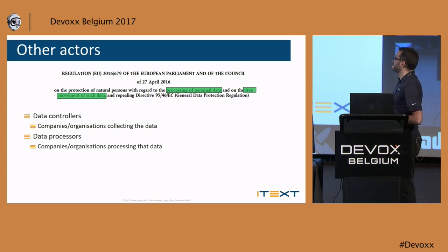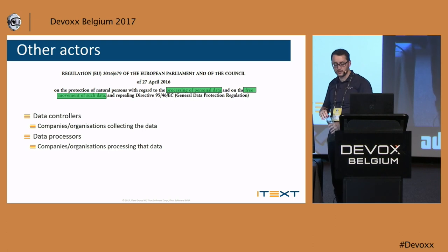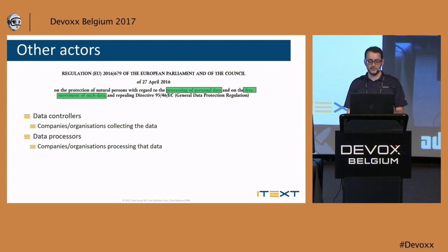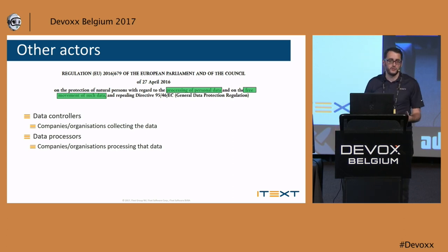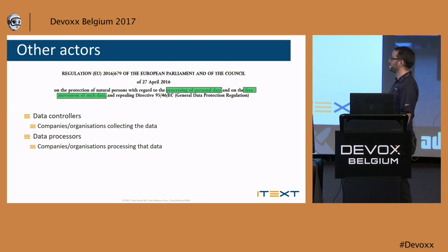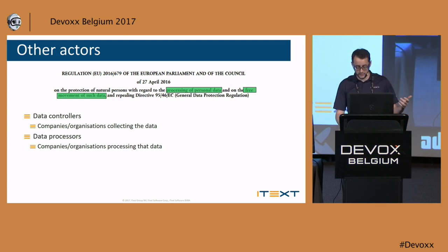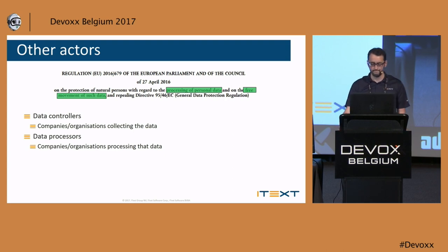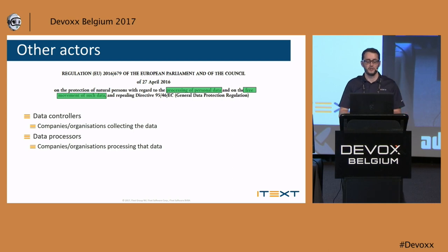The other actors are indicated by 'processing of personal data' and 'free movement of such data.' A data controller is a company or organization collecting data — basically anyone working for a company works for a data controller. A data processor is a company that processes data on behalf of the data controller — think of tools like Dynamics CRM or marketing tools that, based on your browsing behavior, assign you a score as a 'hot lead' or not. These are the other two actors that should be careful when implementing the GDPR.